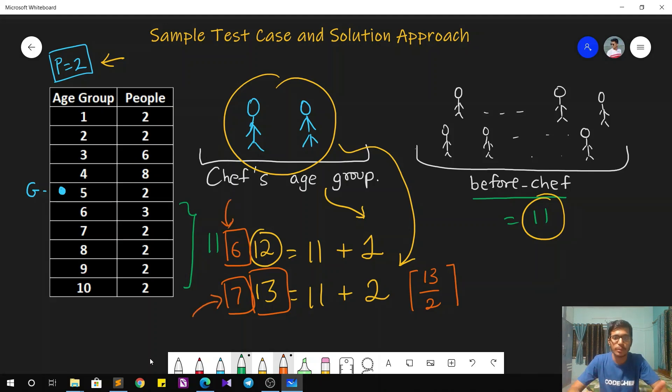So this is going to be our solution approach. It is pretty simple. For each given test case, we calculate the fixed amount of people that are going to get vaccinated before Chef and then after that, we just add 1 if Chef is the first person to get vaccinated or else we add the count of Chef's age group that is 2 in this case. So this will give us the minimum number of days and the second one will give us the maximum number of days.